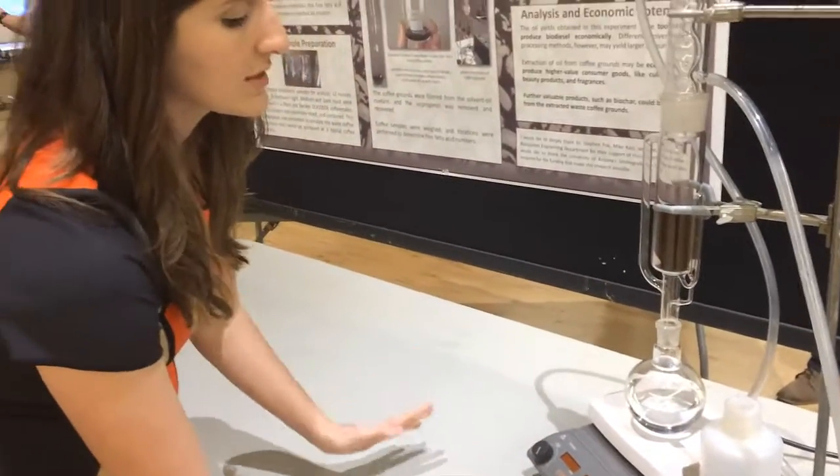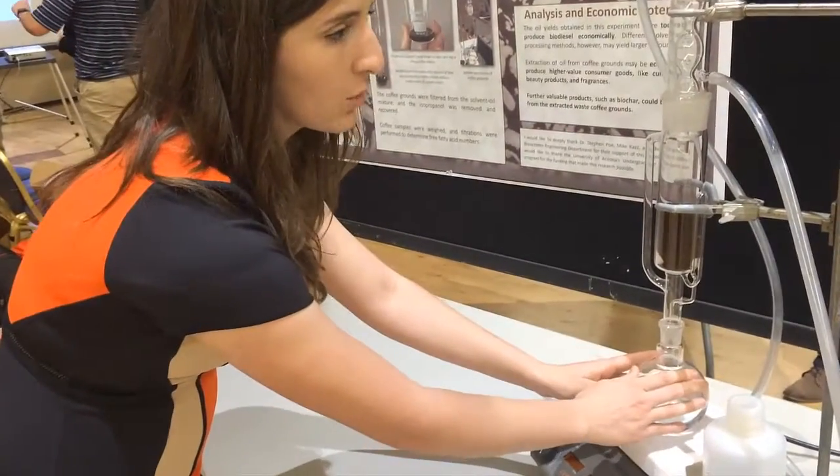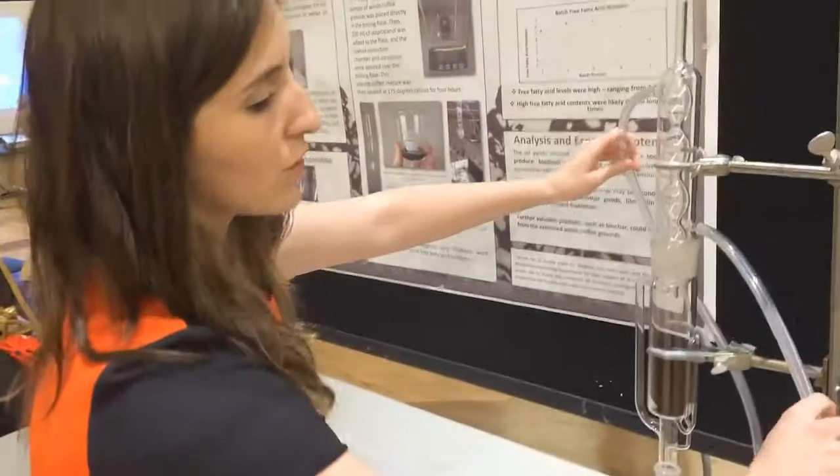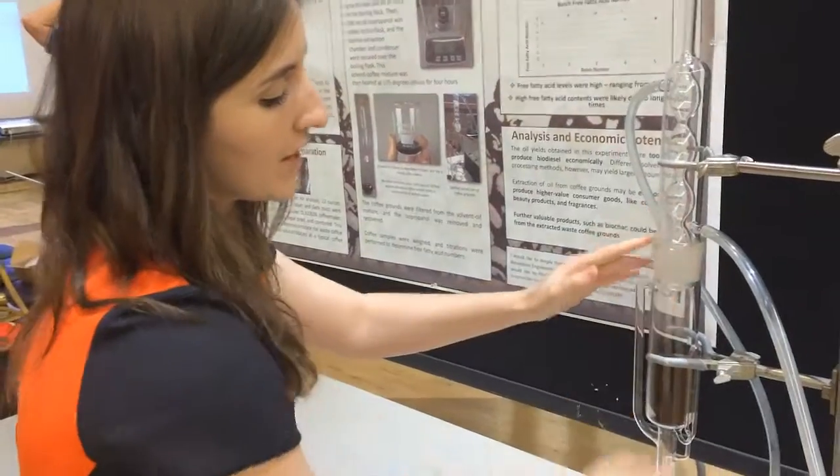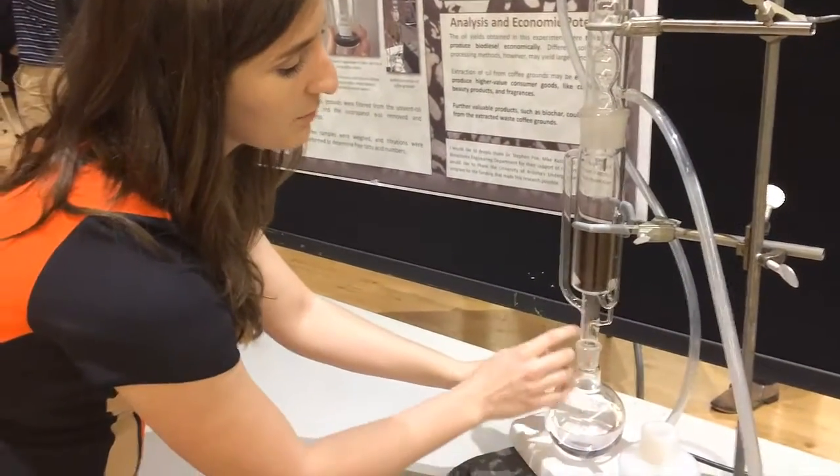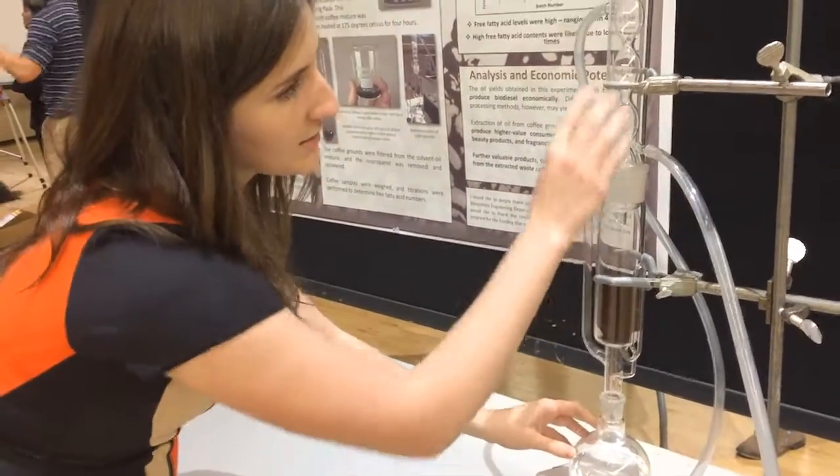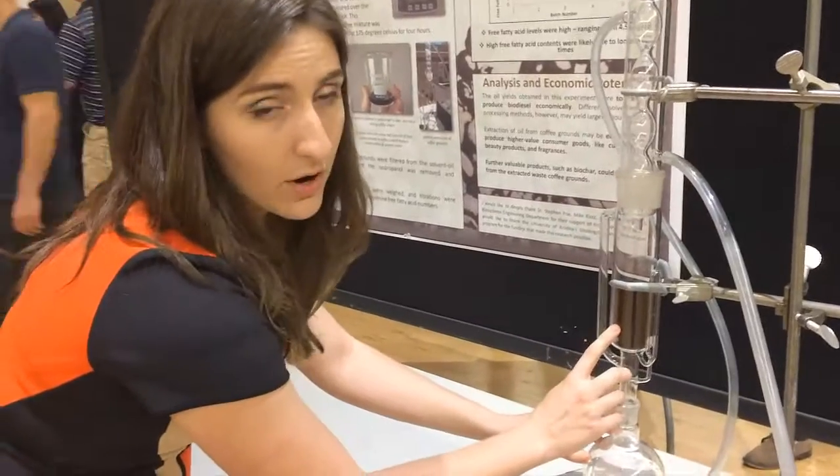So the way this works is that you have the solvent heated in this bulb, and then you have very cold water running through the tubing from a condenser. Basically the cold water runs from here, and you have the solvent evaporating up through here, and it's condensed and it falls down onto the coffee grounds.